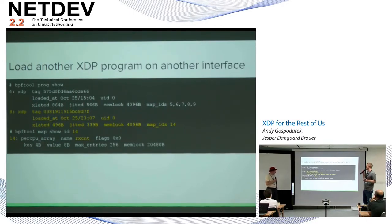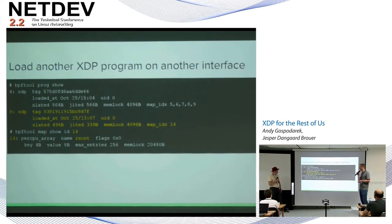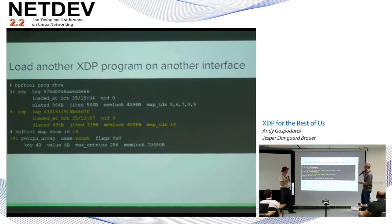Loading a second XDP program on another interface, bpftool now shows a new program with ID 8, a new computed tag, loaded 8 hours later, with one associated map ID 14. If you recognize the program you might realize it's xdp2 from the kernel source tree — and in newer kernels you can actually get the map name out of bpftool, which is great. The earlier program was compiled previously so the name wasn't there — a good example of how fast this stuff is moving.